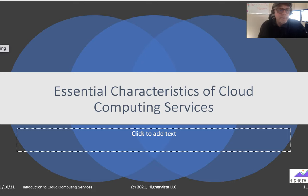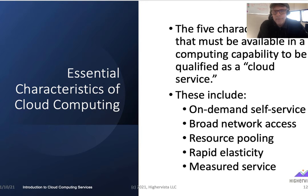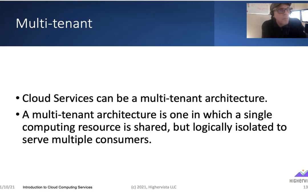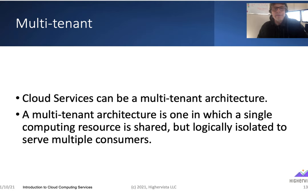Let's do a deeper dive into the essential characteristics. On-demand self-service means you provision on demand. Broad network access involves capabilities available over the network. Resource pooling is where shared resources raise cybersecurity concerns — you need to think about how resources are being sliced and allocated. Rapid elasticity means expanding or shrinking the environment. Measured service tracks usage. Multi-tenant architecture — like an apartment building — means a single computing resource is shared but logically isolated to serve multiple consumers.